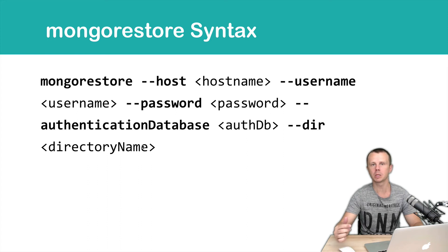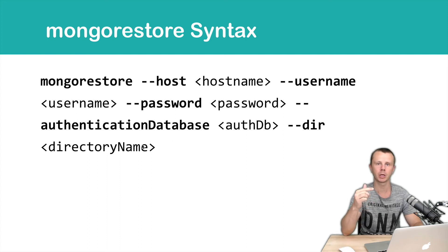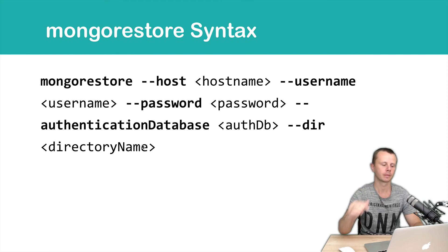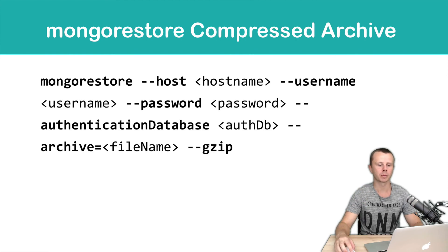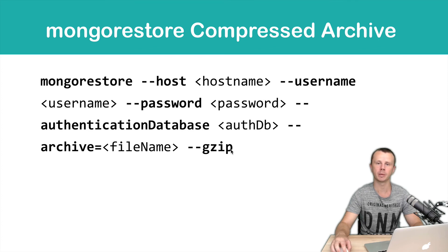If you omit the directory name, then the Mongo Restore utility will try to find the dump folder. If you want to restore from a compressed archive, you should use the archive option and the dash-dash gzip option.